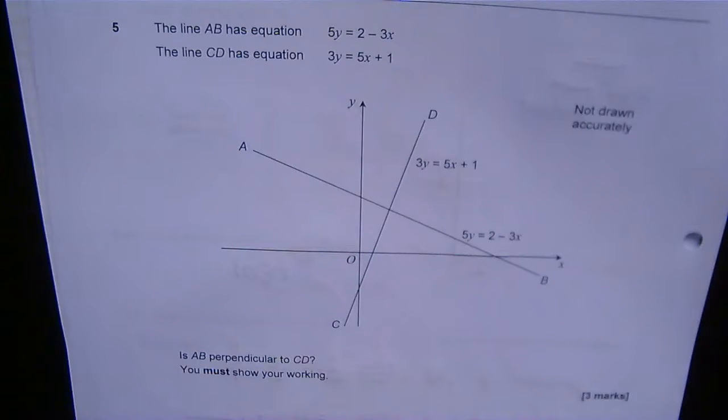Question 5. The line AB has equation 5y = 2 - 3x, and the line CD has equation 3y = 5x + 1. The question asks: is AB perpendicular to CD? You must show your working.